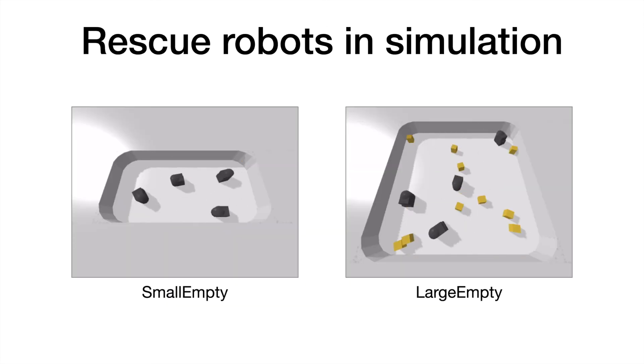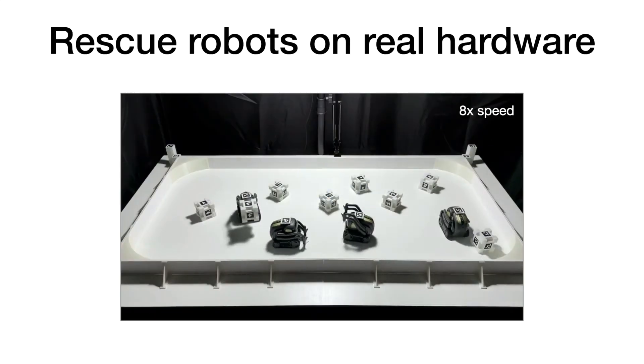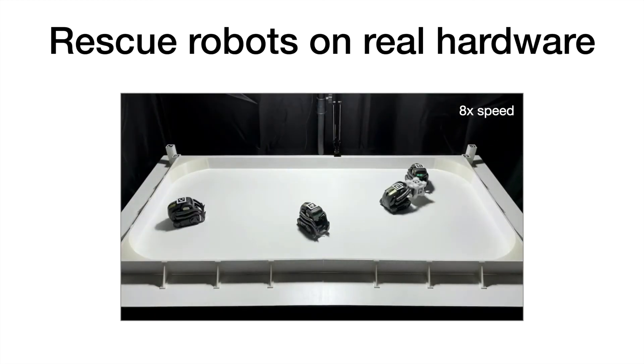Here we show teams of robots that were trained for the search and rescue task. In order to efficiently complete the task, the robots need to distribute themselves throughout the environment and divide up the work evenly. We see that they are indeed able to coordinate with each other and complete the task efficiently. And here we show the search and rescue policy running on real robots.